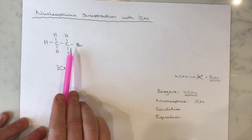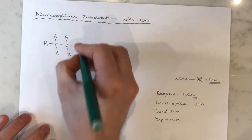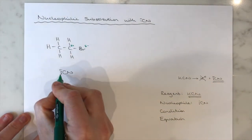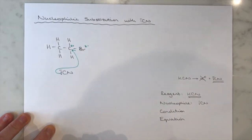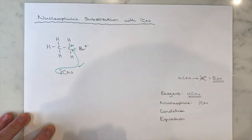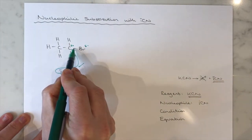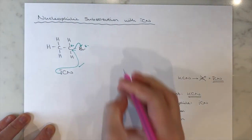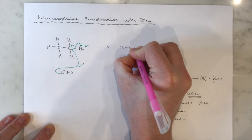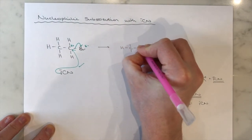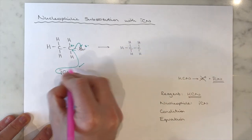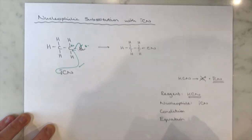Using bromoethane with a cyanide ion — it starts in exactly the same way. My bromine is more electronegative than the carbon, so that results in δ+ and δ− charges. The lone pair on our cyanide is attracted to the δ+ carbon of our bromoethane — that's my first mark in an exam. Then the bonding pair of electrons in that carbon-to-bromine bond both move over onto the bromine to turn it into a bromide, and the CN group is added on. The Br⁻ is our leaving group.